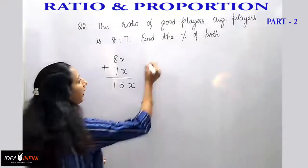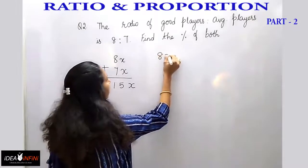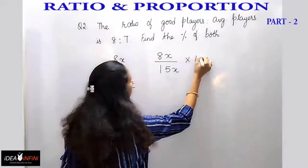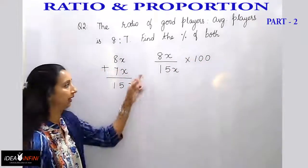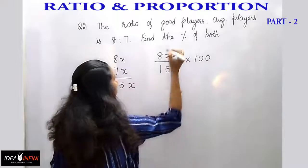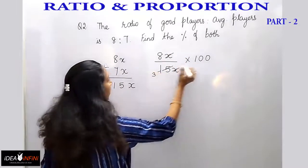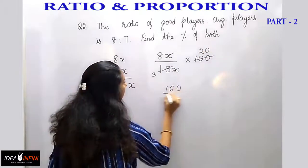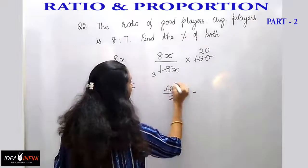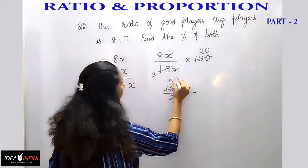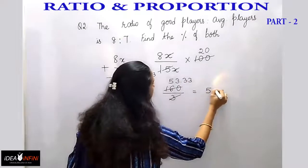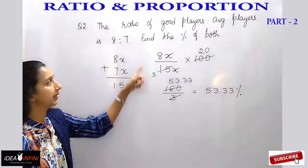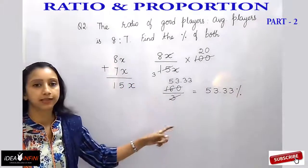To find the percentage of good players: 8x by 15x into 100. The x cancels out. Simplifying: 8 into 100 divided by 15 gives 800 by 15, which equals 53.33. So 53.33% is the percentage of good players.